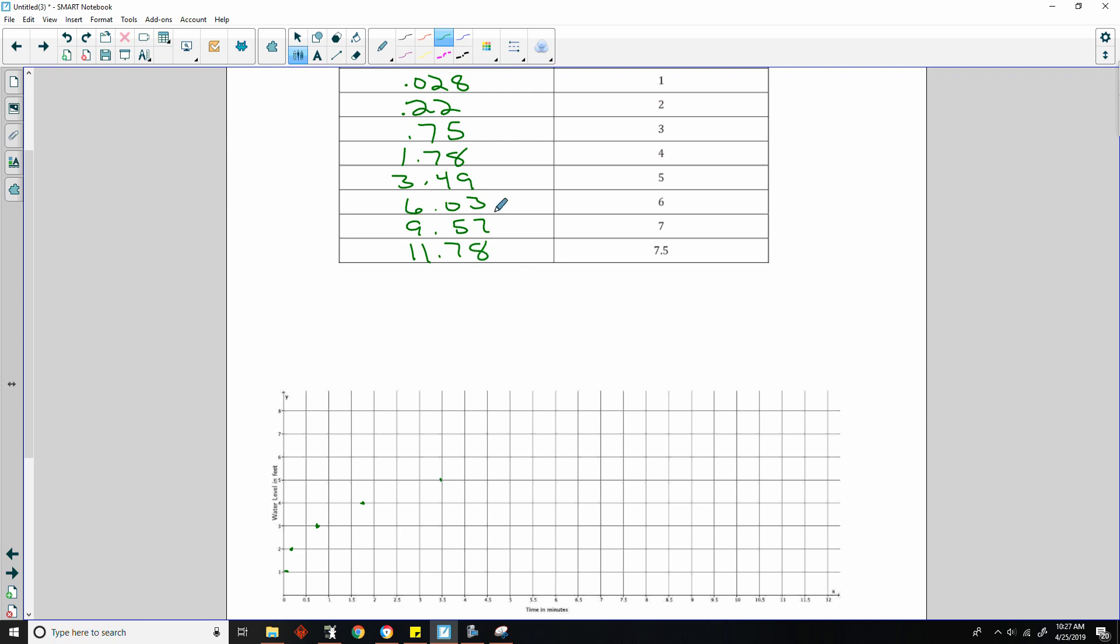All right. And then 6.03 is just a little bit more than 6. So that's right here. And then 9.57. 9.5 is here. Just a little bit more than that. 9.57 would probably be up there. And then finally 11.78, a little bit more than halfway between those two, right up there. So this is what's happening. So it starts off filling fast, but then it slows down because the area around is getting less and less.